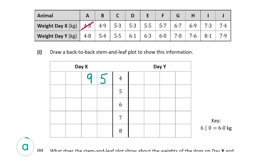The digits in the table we've been given are in order from lowest to highest. However, most of the time in the Leaving Cert they are not in order, and you're required to put them in order yourself. I've written in the 5 for 4.5 and the 9 for 4.9. Now I'm going to put in two 3s beside the 5, followed by a 5 and then a 7, for 5.3, 5.3, 5.5, and 5.7.